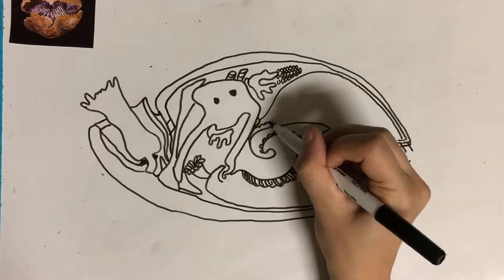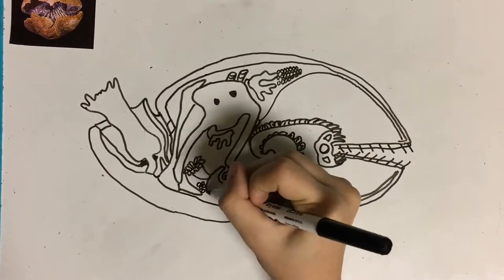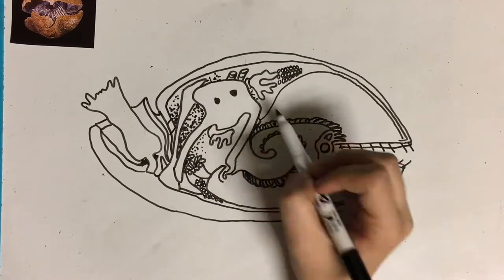Brachiopods are classified as both deuterostome as well as protostome, but are predicted to branch inside the proposed clade of protostome animals.